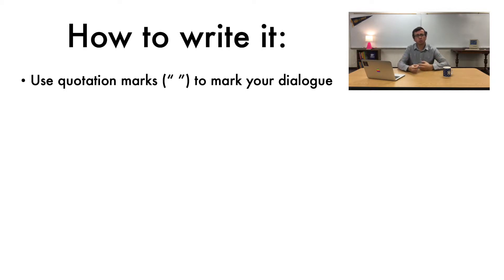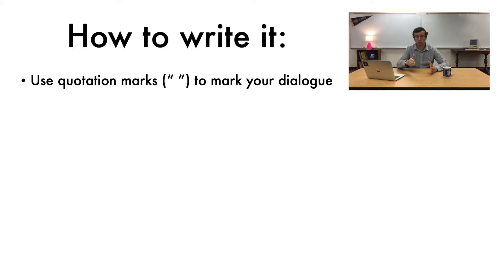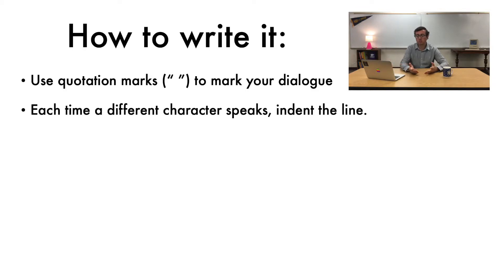That example I showed you at the beginning of the video had no quotation marks. So it got very confusing because you could kind of tell that somebody was talking, but you weren't entirely sure. If you had read that little chunk in the middle of a story, you would be very confused. So use quotation marks so that your readers know this is dialogue — this is somebody talking. The next thing you should do is that each time a different character speaks, you indent the line.